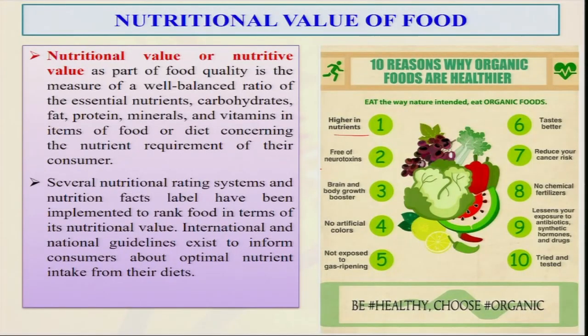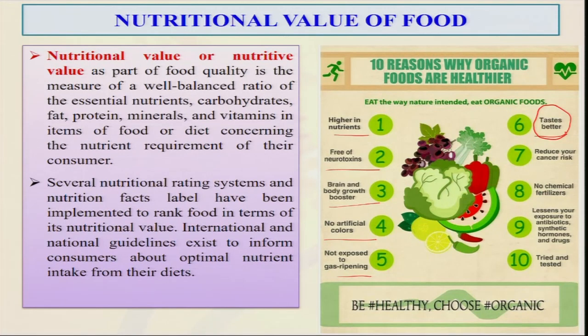Food has immunity development properties; they boost our defense mechanism. If we see the different reasons why people prefer organic food, especially fruits and vegetables compared to conventionally grown crops: it is generally known to be higher in nutrients, free of neurotoxins, helps the brain and body, has no artificial color, is not exposed to gas ripening, is considered organoleptically better-tasting, and reduces the risk of different types of diseases.